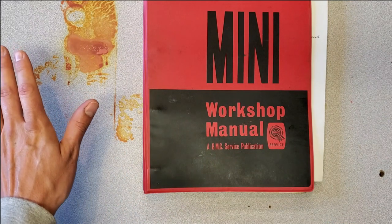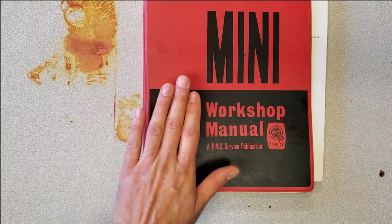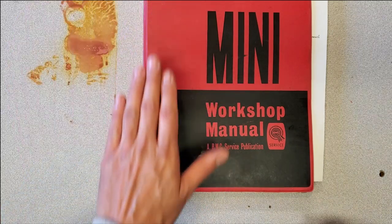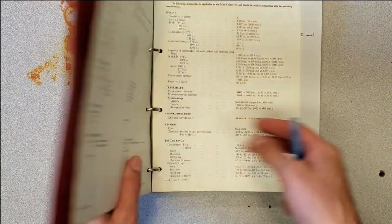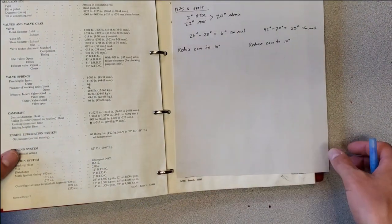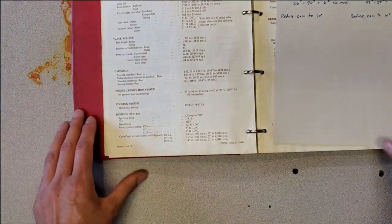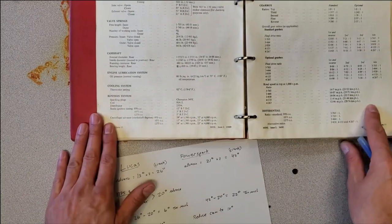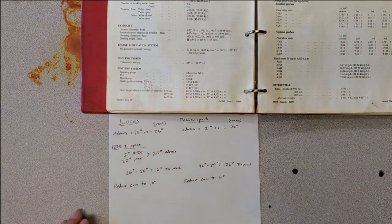Obviously, the Lucas one and the PowerSpark one aren't going to match the figures in this book, but I'm using the book figures to compare the two to each other. Now, in the book, it gives us an ignition system breakdown here, and I'm going to zoom in the camera so you guys can see what I'm going through here.